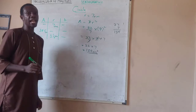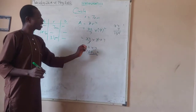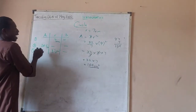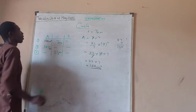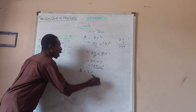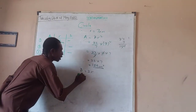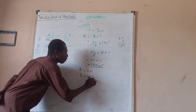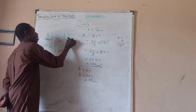Any time you calculate an area, you leave your answer in square units. If it is in meters, it will be meters squared; if it is in centimeters, it will be centimeters squared. So the area here is 154 centimeters squared. And from the relationship D equals 2r, my diameter is D equals 2 times 7, which equals 14 centimeters.